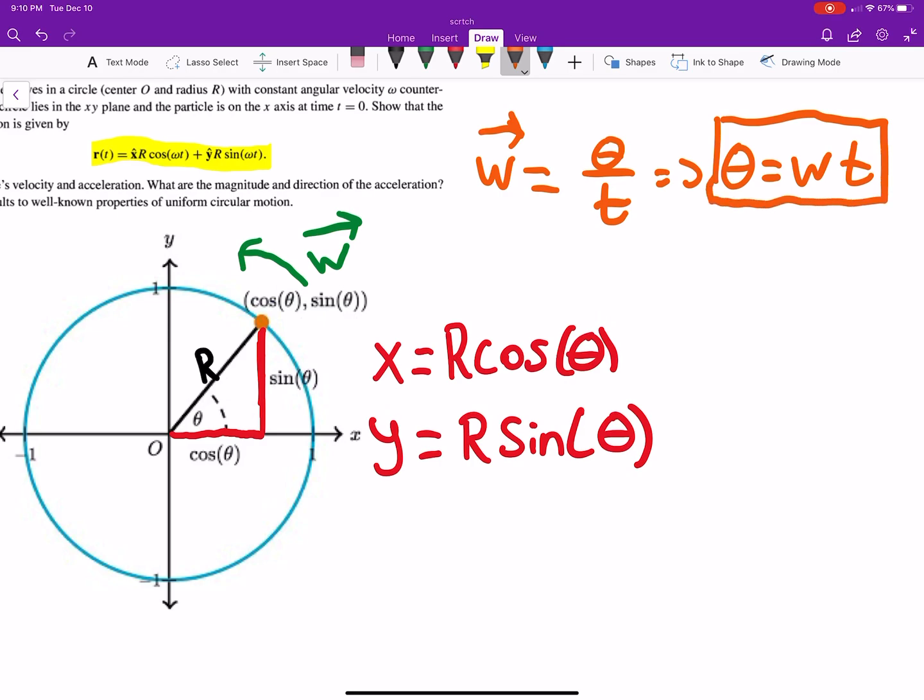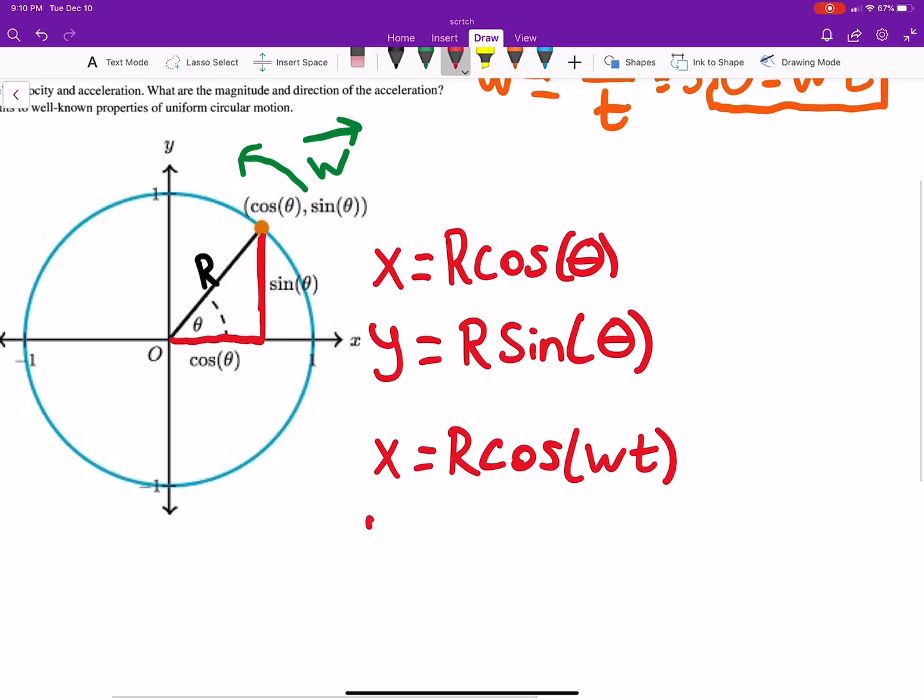If theta is really equal to omega t, then I can say x is equal to r cosine, and if theta is just omega t, I can just replace that. And exact same idea for y. Hopefully that bit makes sense.